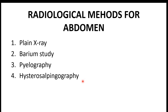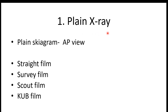In this video we discuss the plain X-ray of the abdomen, which is also known as a plain skiagram. Usually the plain X-ray or skiagram of the abdomen is taken in the anteroposterior view, meaning the radiation from the X-ray machine comes from the anterior side of the abdomen, passes through the abdominal cavity, and falls on the radiological film on the posterior aspect.